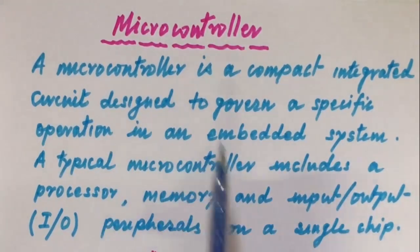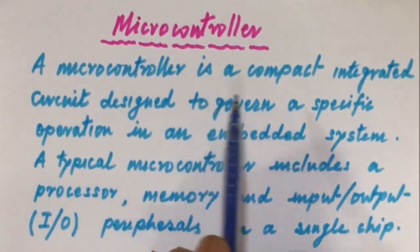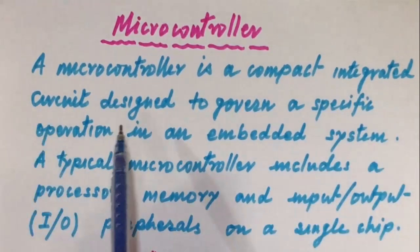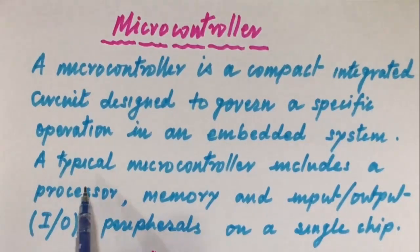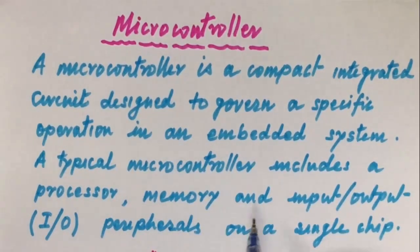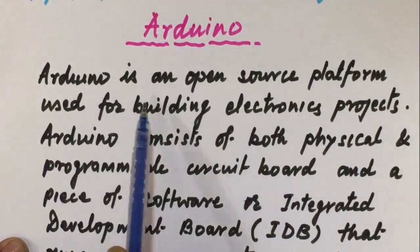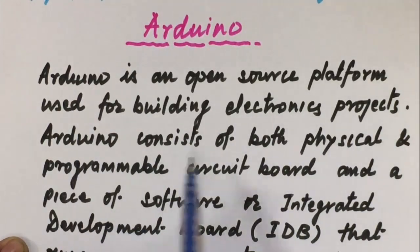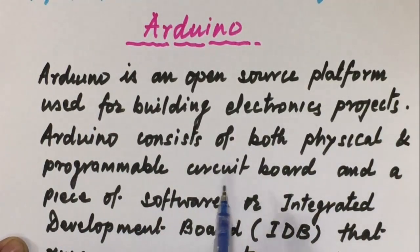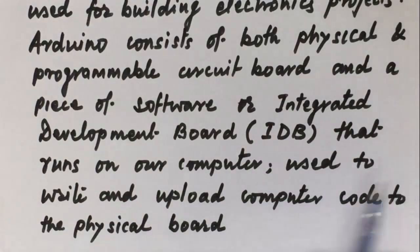Let us know about microcontroller and Arduino. A microcontroller is a compact integrated circuit designed to govern a specific operation in an embedded system. A typical microcontroller includes a processor, memory and input-output peripherals on a single chip. Arduino is an open-source platform used for building electronics projects. Arduino consists of both physical and programmable circuit boards and a piece of software or integrated development environment, also called IDE, that runs on our computer, used to write and upload computer code to the physical board.